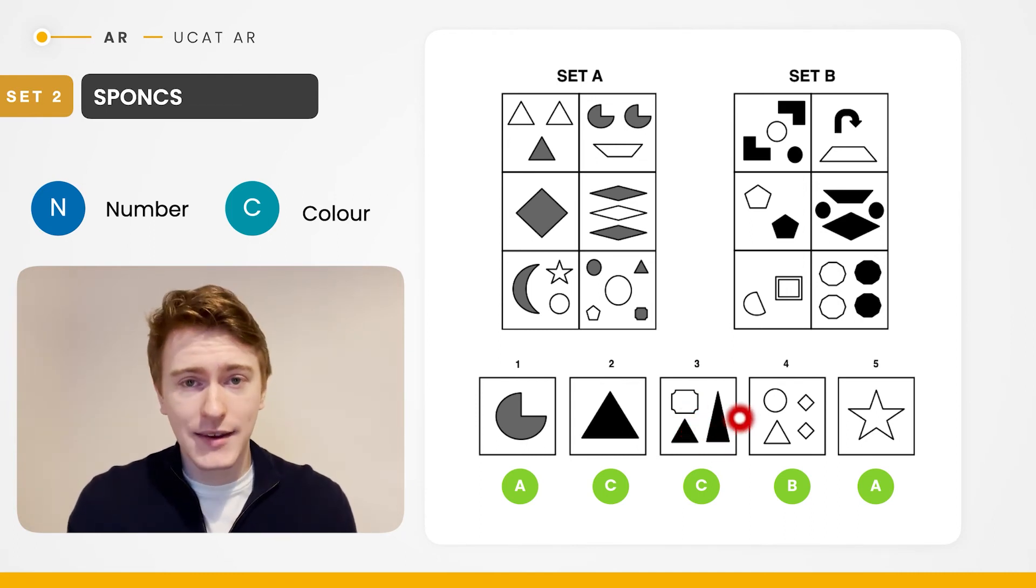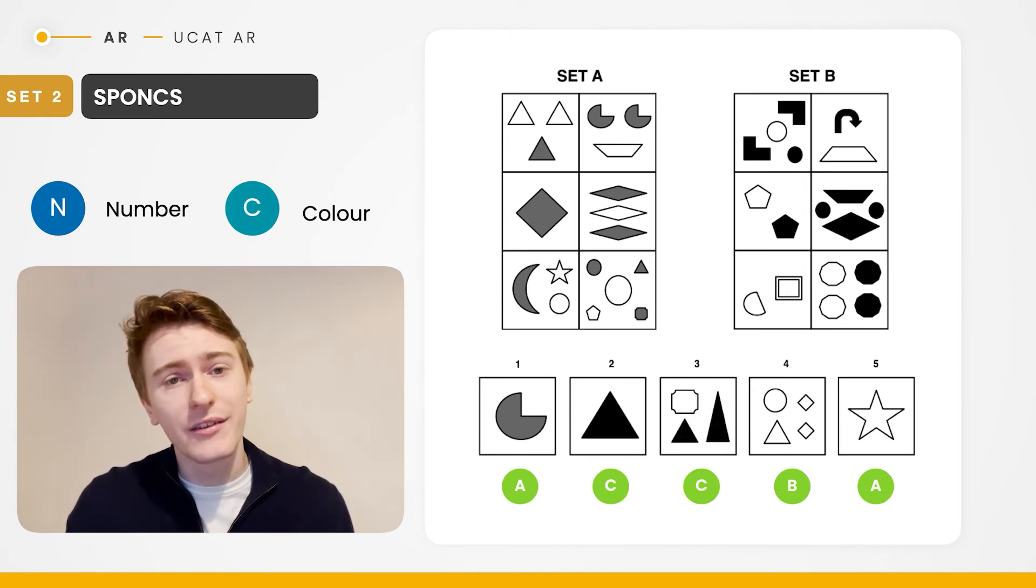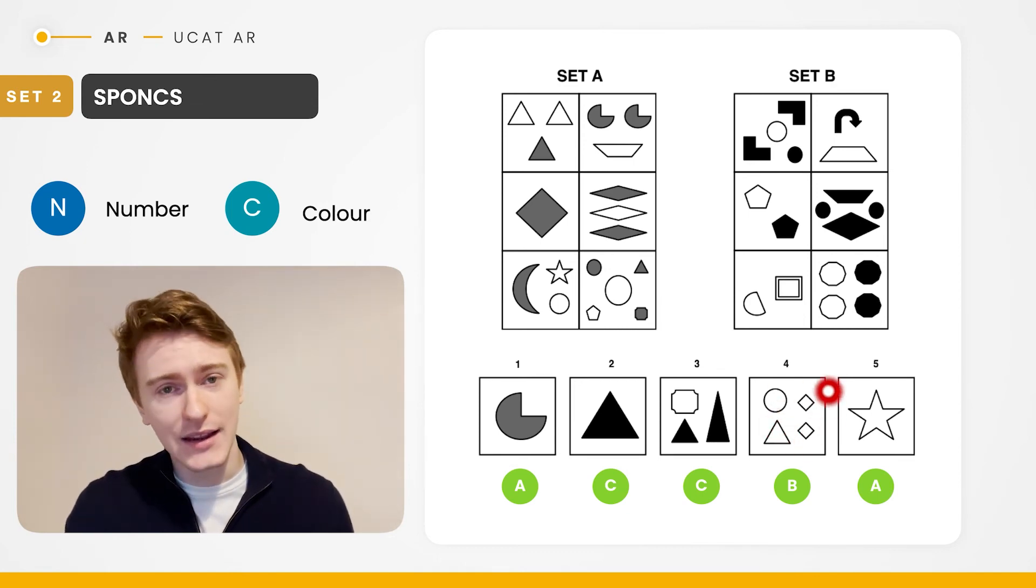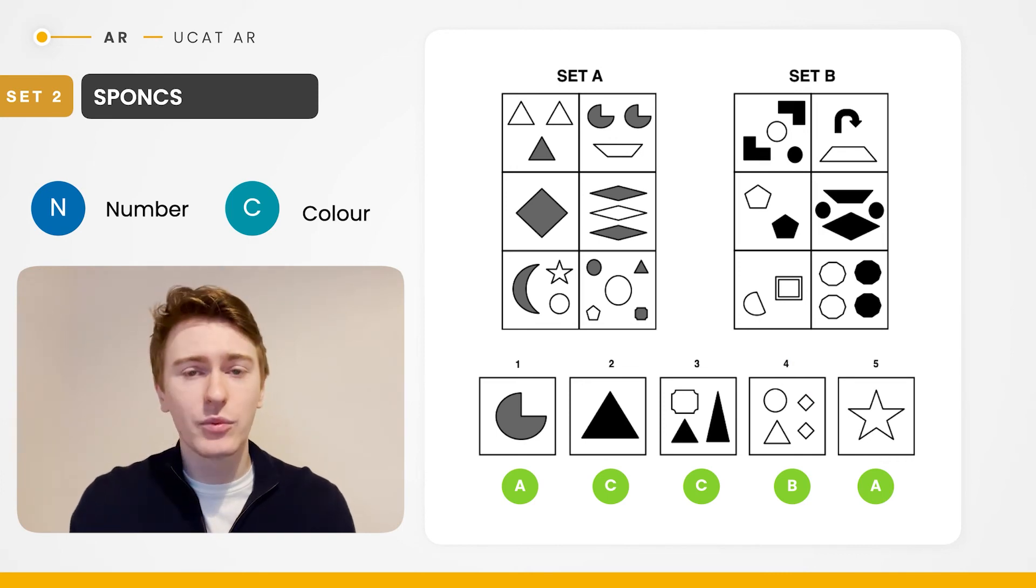Test shape three belongs to, again, neither. It's an odd number of shapes, but it's a mixture of white and black. Test shape four belongs to set B. It's an even number of shapes. They're all white. That's okay, because we have an example in set B of the bottom left corner where we have all white shapes.